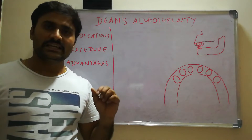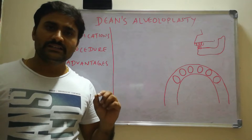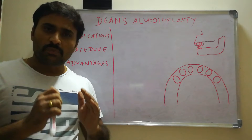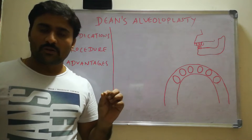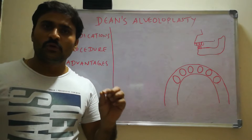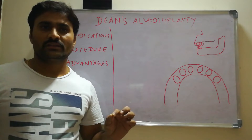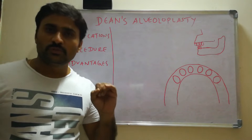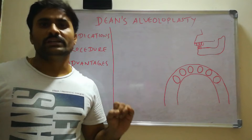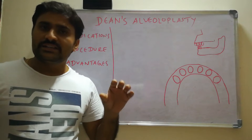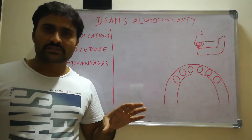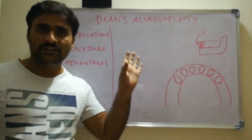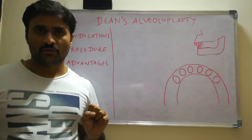Dean's alveoloplasty is indicated in cases of maxillary large buccal undercuts. Dean's alveoloplasty is done only on the maxilla — not in the mandible. It is done immediately after the extraction of maxillary anteriors, that is canine to canine.